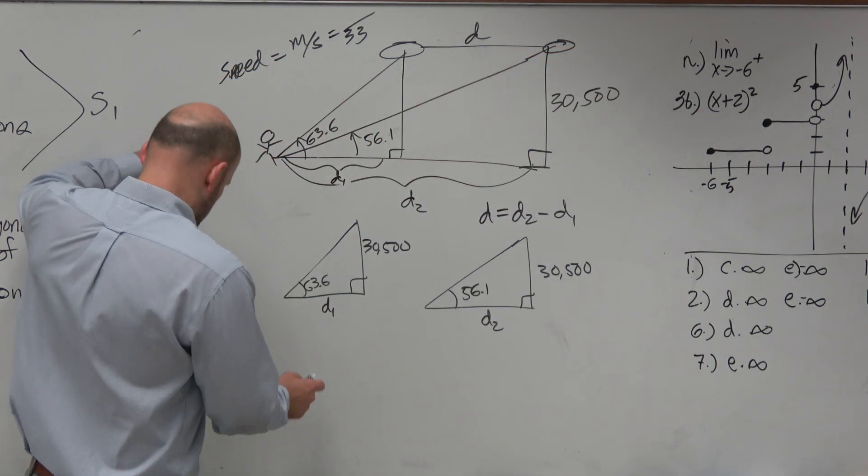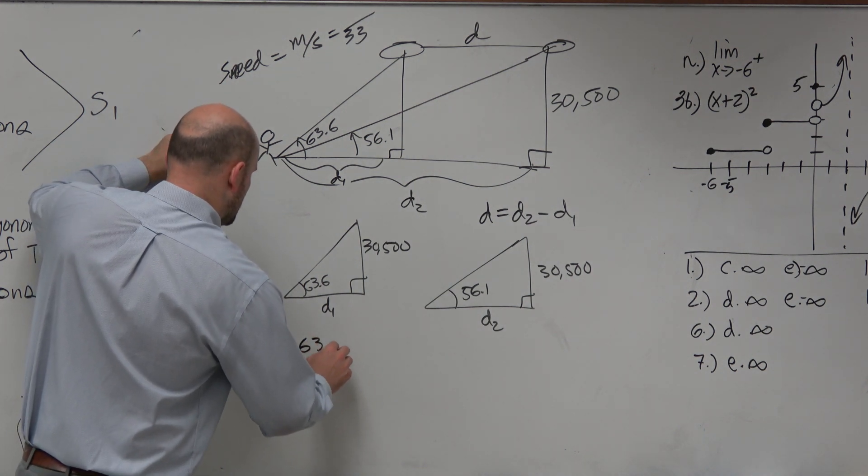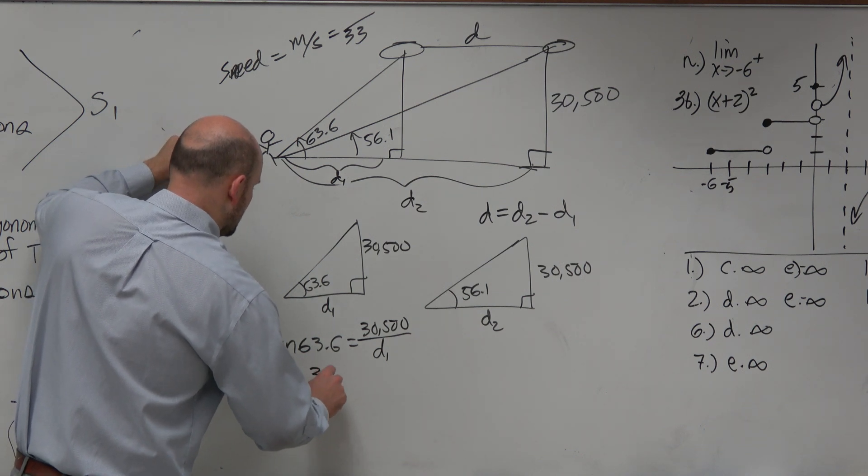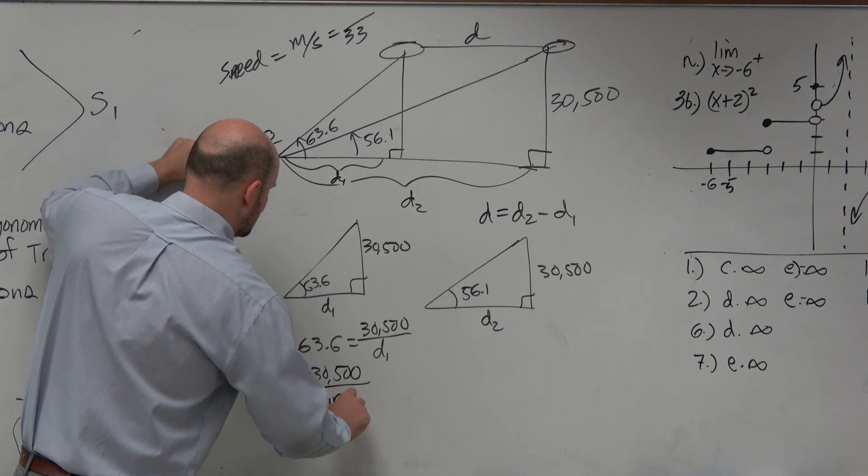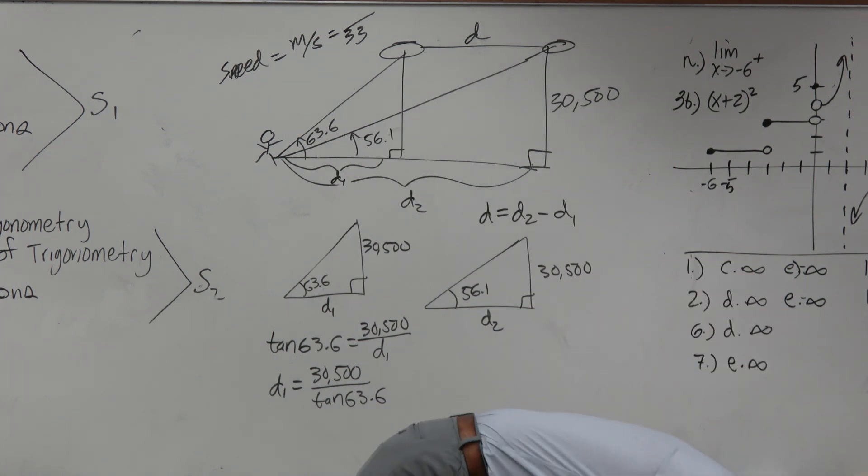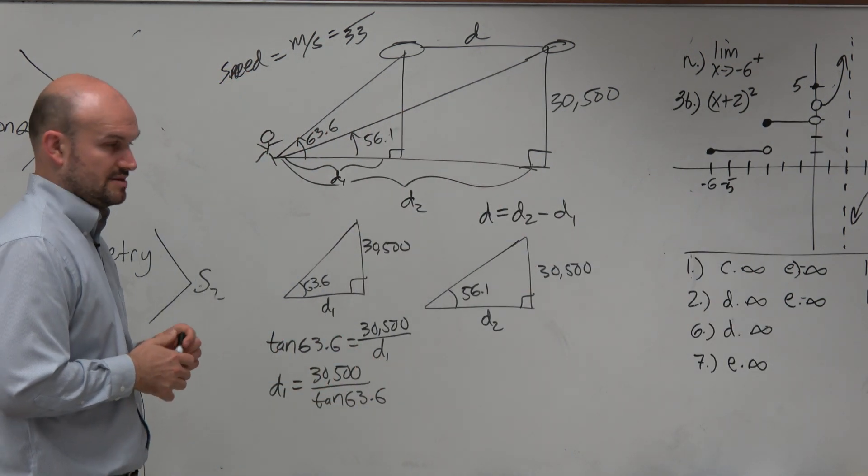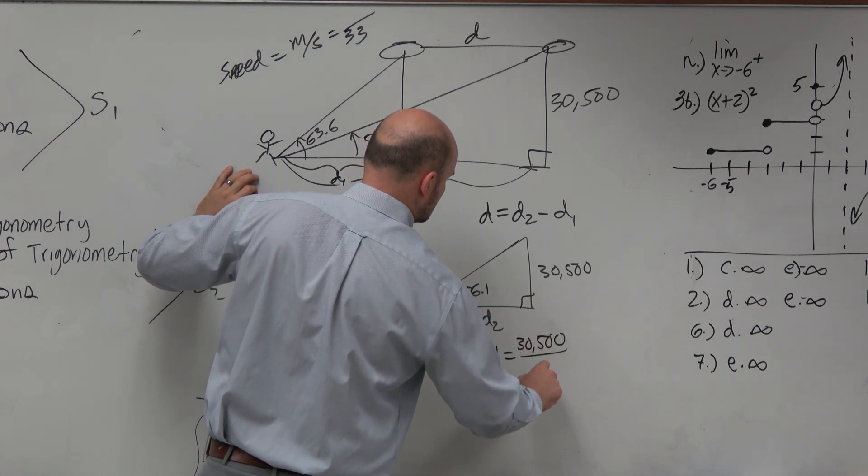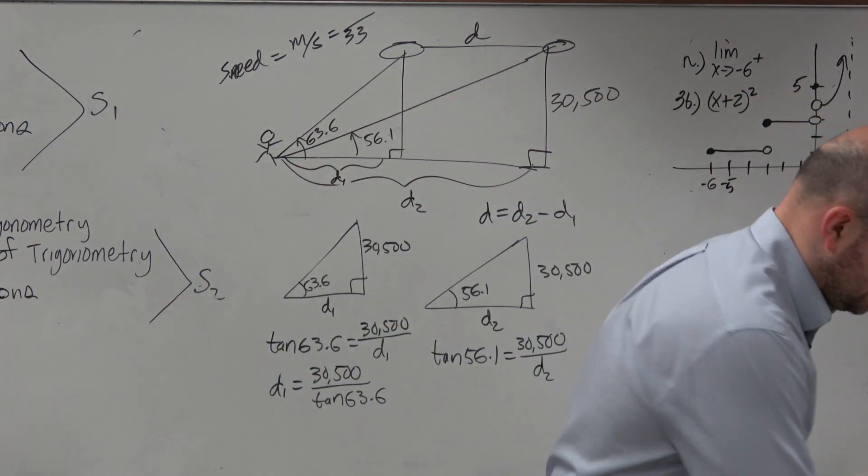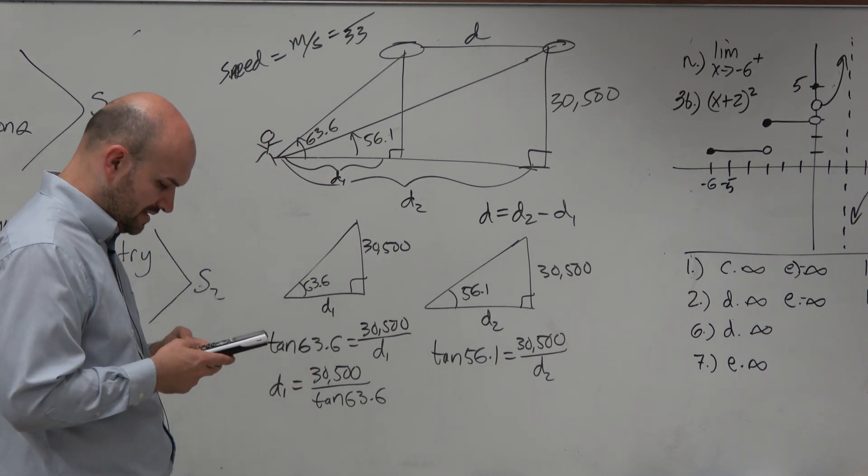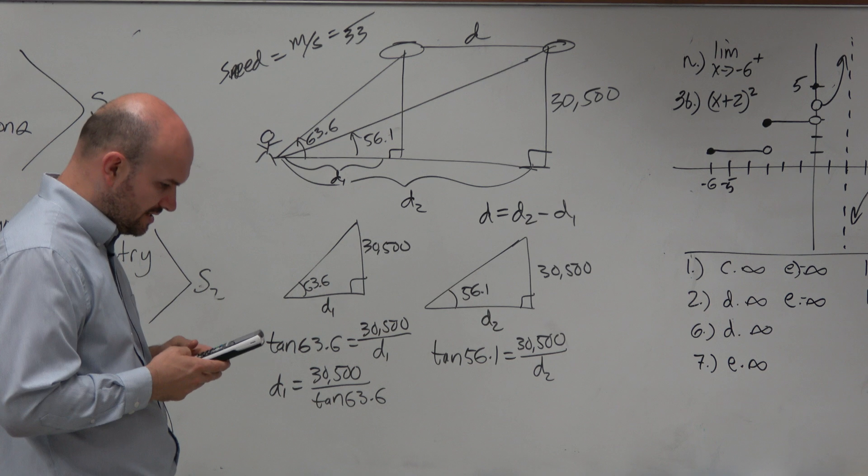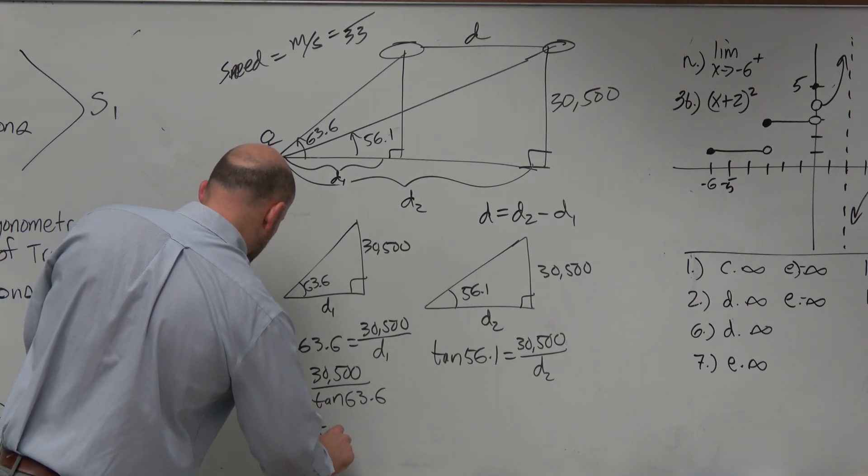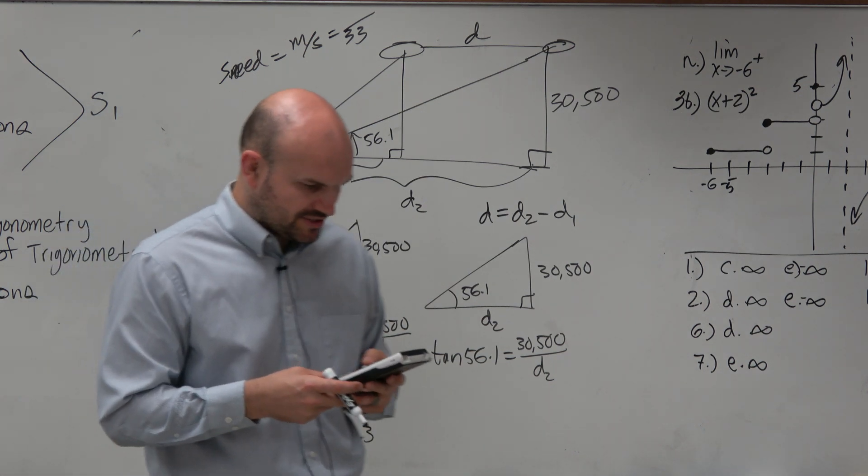Now, this one is a little bit different because when you do the tangent here, you do tangent of 63.6° equals 30,500 divided by D1. So to solve for D1, that's actually going to be 30,000 divided by the tangent of 63.6°. And I would store these in your calculator. So let's do this: 30,500 divided by the tangent of 63.6°. And I get D1 equals 15,140.3. I'm going to store this as alpha A.